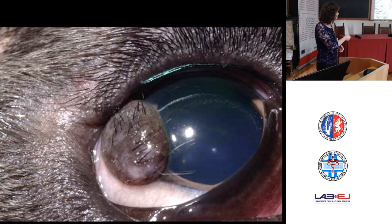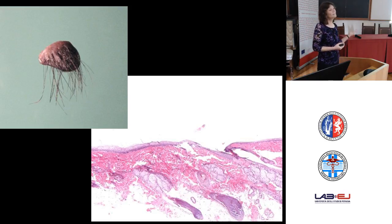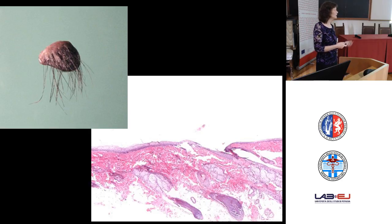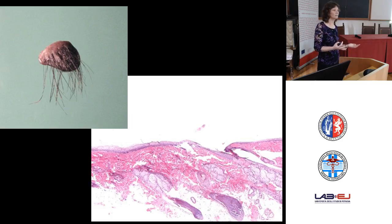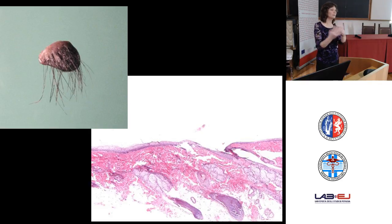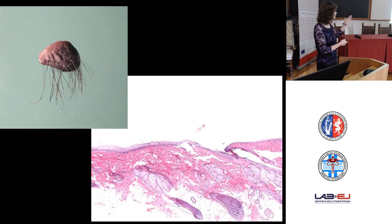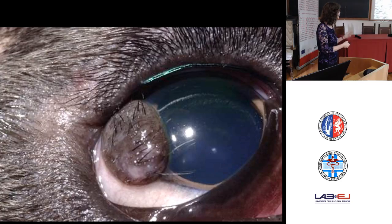Corneal dermoid is very easily corrected by surgery and it is uncommon that we see it as pathologists. In this particular case they submitted it for evaluation. Histologically it generally just looks like normal skin — that's also what it looks like grossly. It's just normal skin in the wrong location, so from a pathology perspective this may be rather boring.